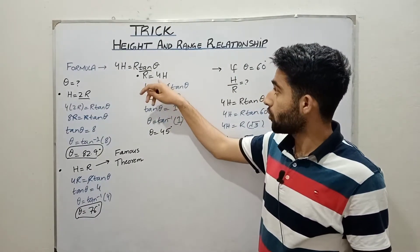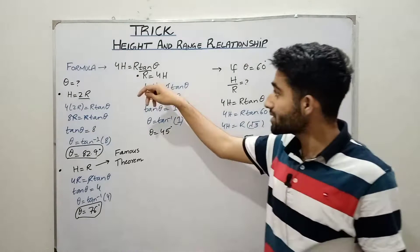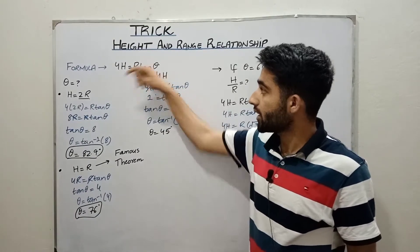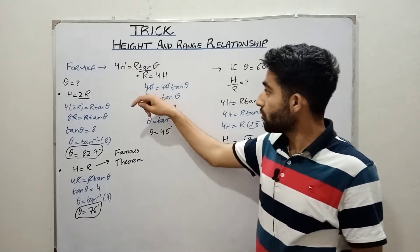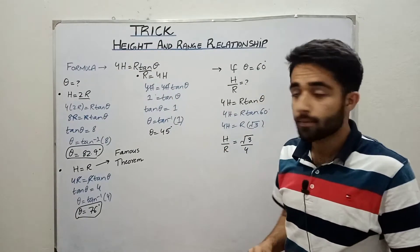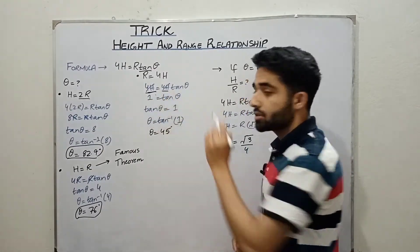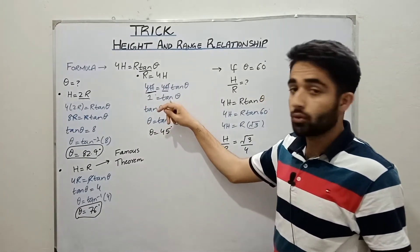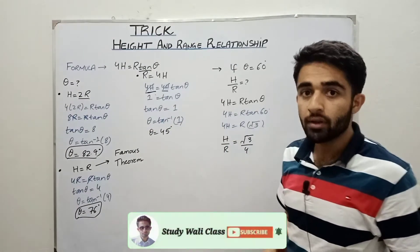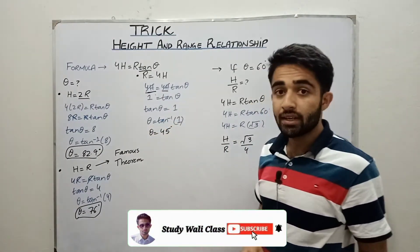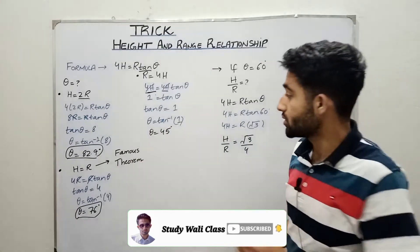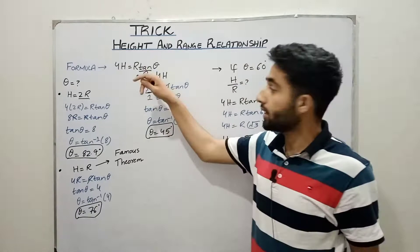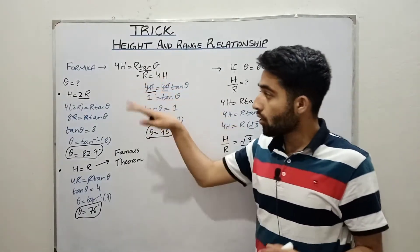The next case: range equals 4 times height. We put 4H in place of range, giving 4H = 4H·tan(θ). The 4H cancels on both sides, so 1 = tan(θ), meaning tan(θ) = 1. Therefore θ = tan⁻¹(1) = 45 degrees, when the range equals 4 times the height.